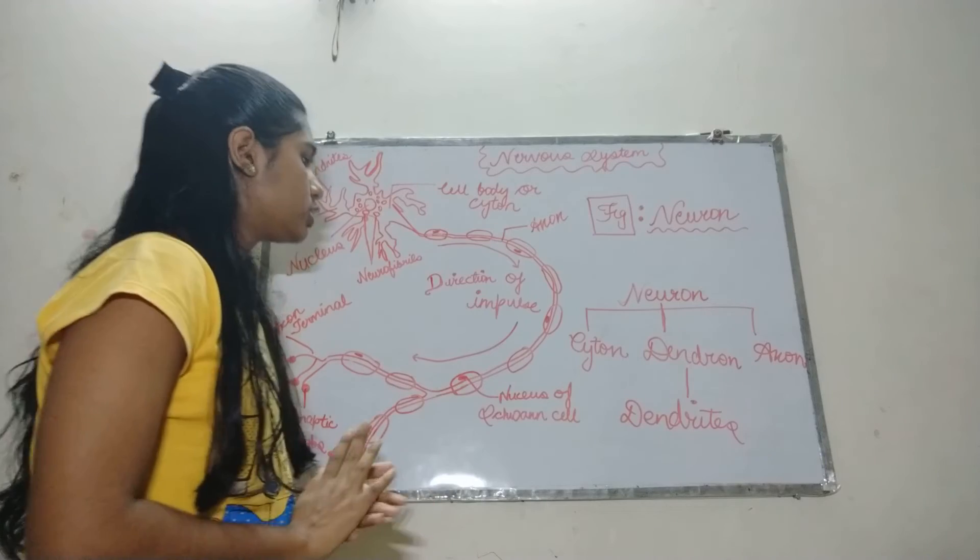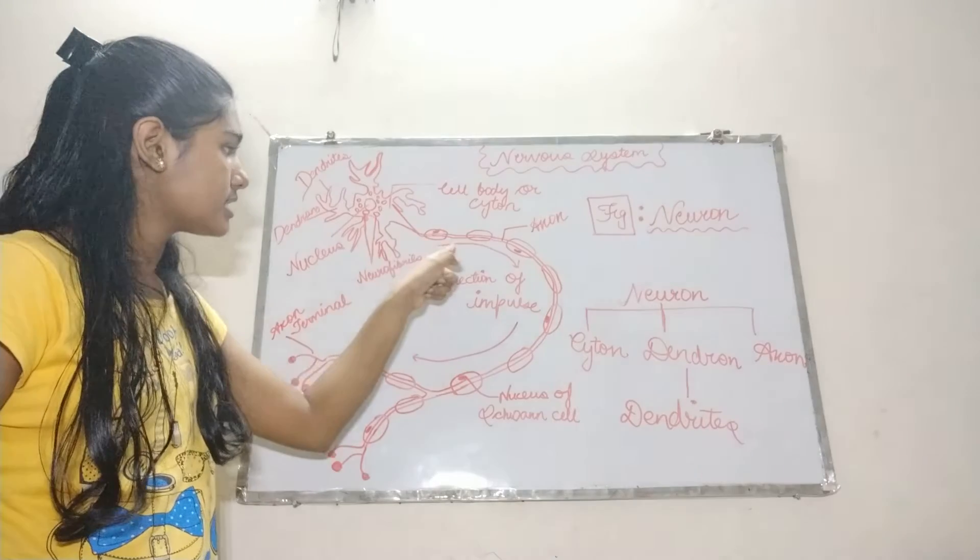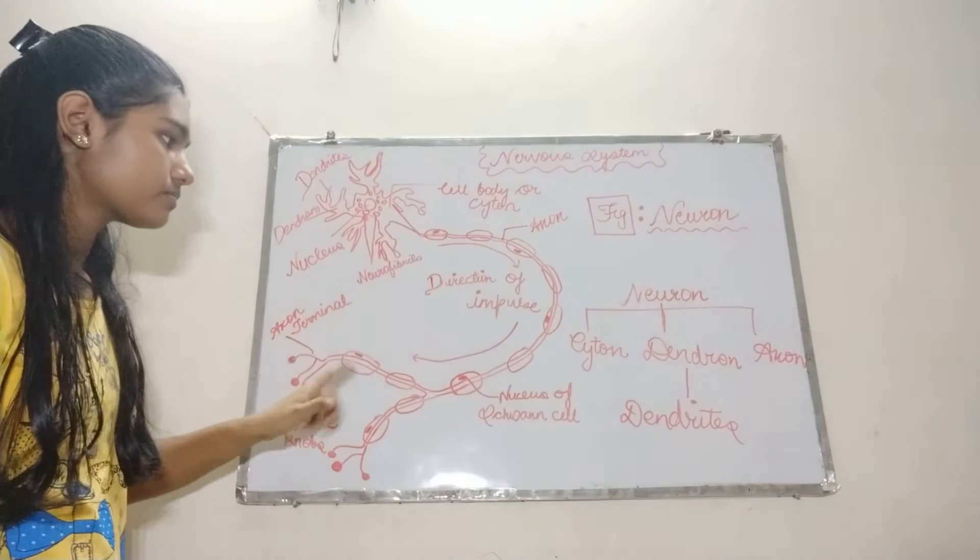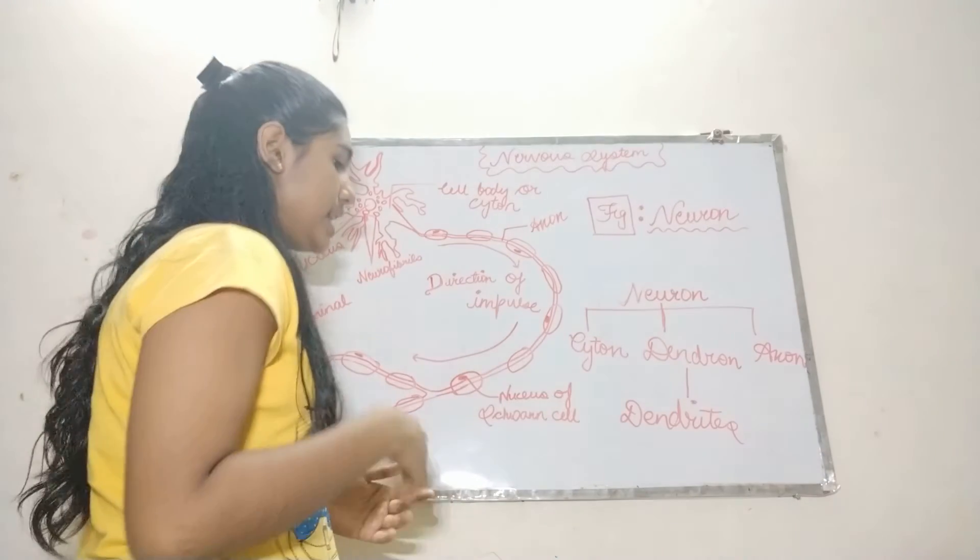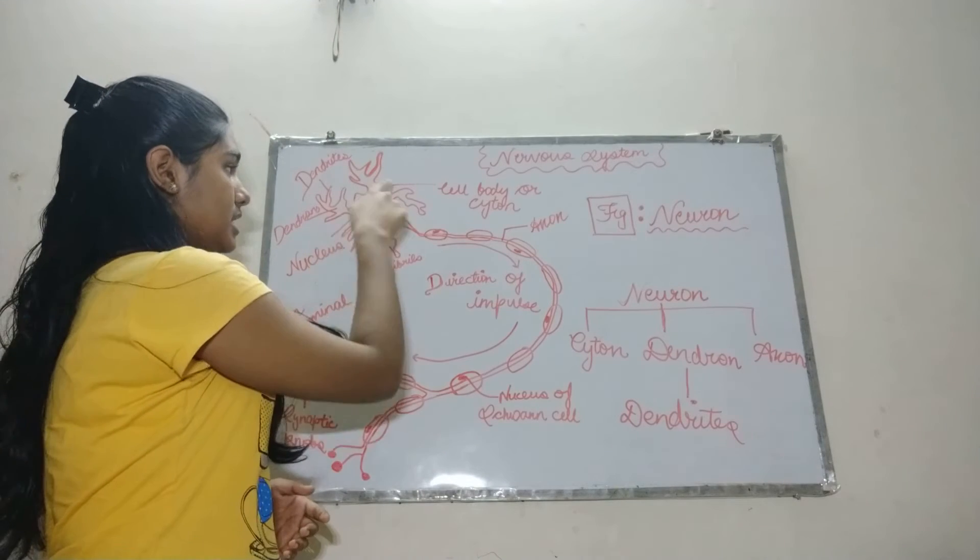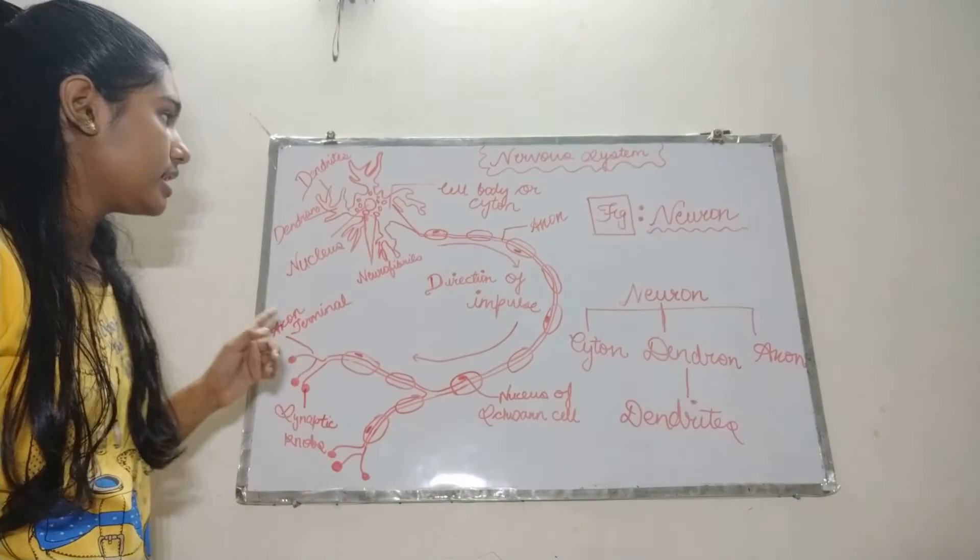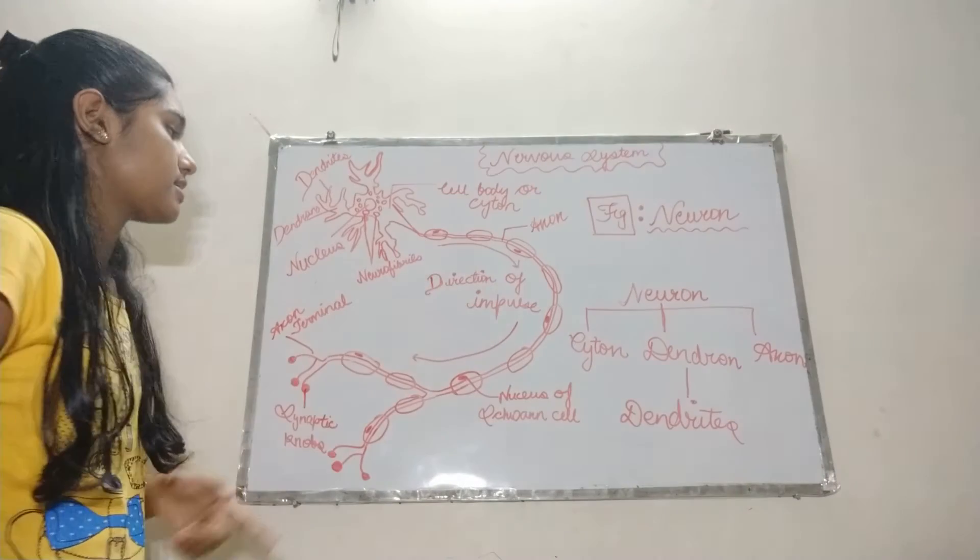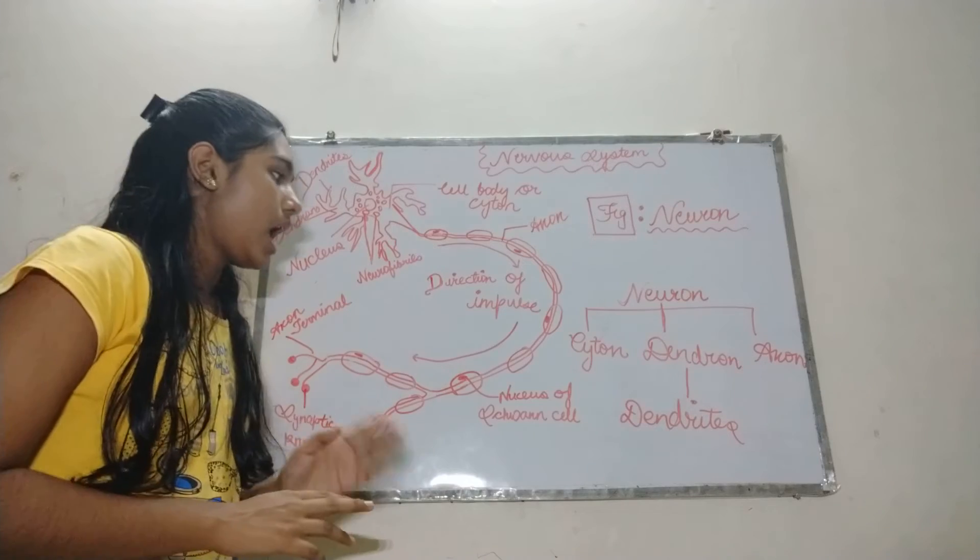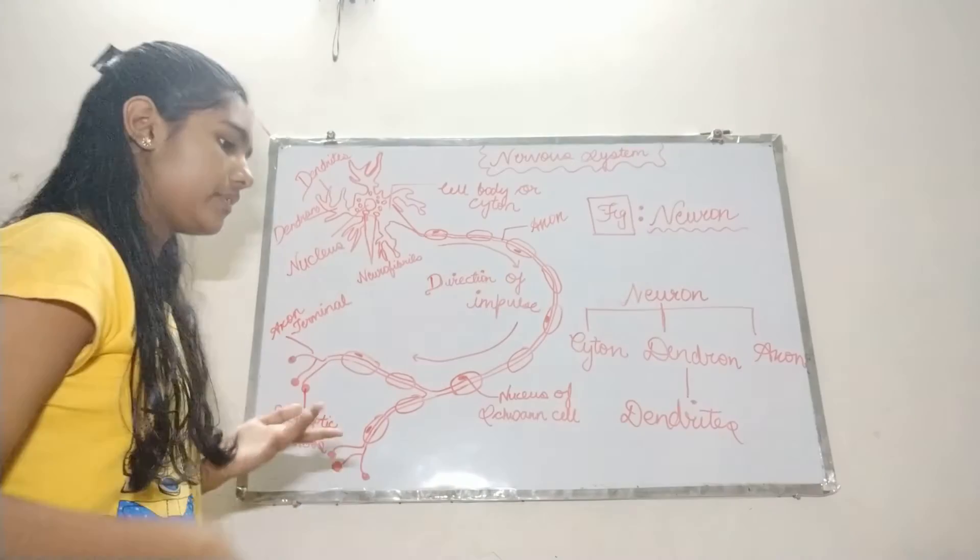Now, talking about our next is axon. What is axon? This is called axon. It is the unbranched process which takes out from the cell body. It is an unbranched process. Our axon can be myelinated or non-myelinated. We will discuss about it.